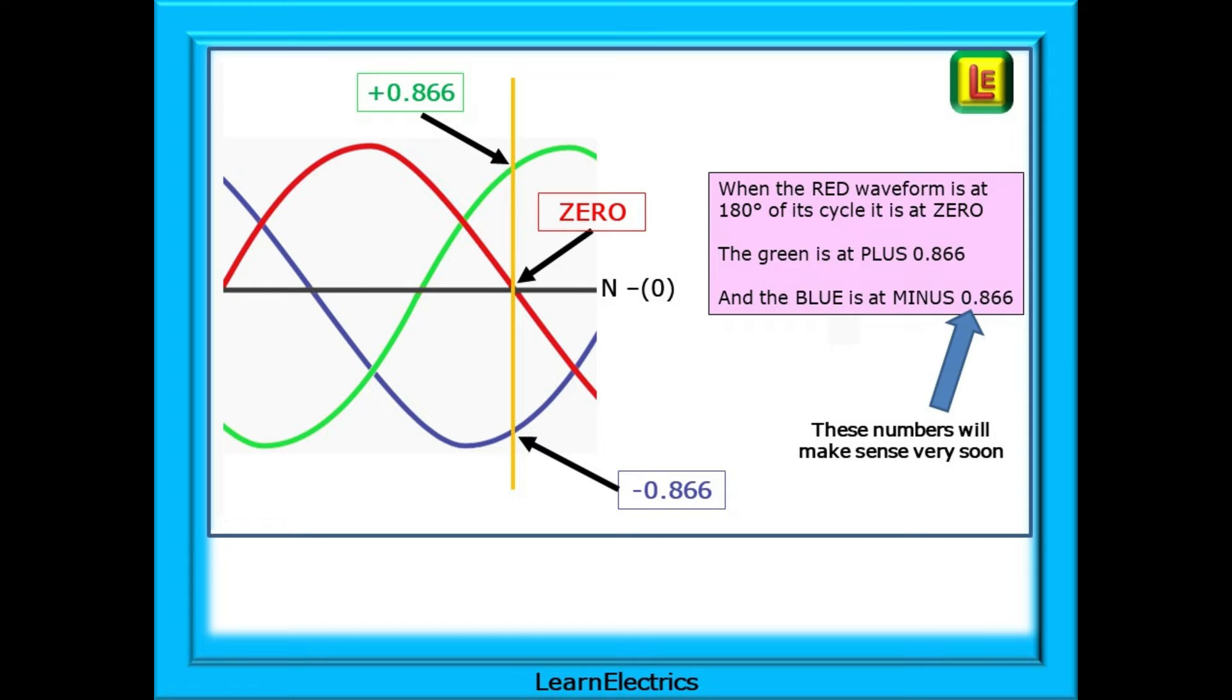In a different example, at this point in time shown by the orange line, the red phase is at the zero point, the green is at plus times 0.866, and the blue is showing minus 0.866. What the numbers do will make sense very soon.